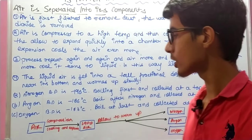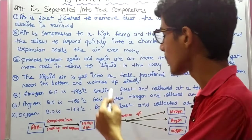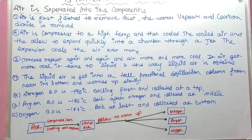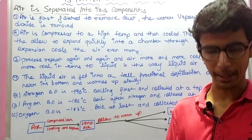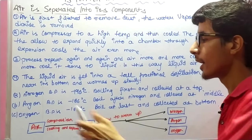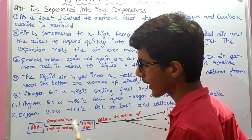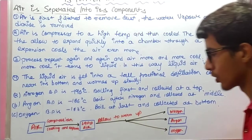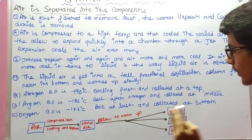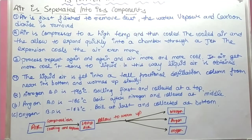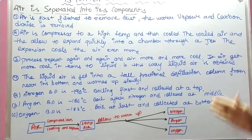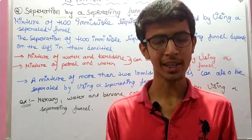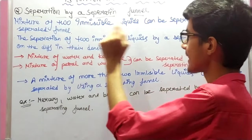Argon is collected in the middle. After that, oxygen starts to boil and is collected at the bottom. This is the process for separating air into its components — nitrogen, argon, and oxygen. So that completes separation by fractional distillation. Now second comes separation by a separating funnel.